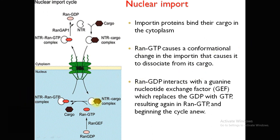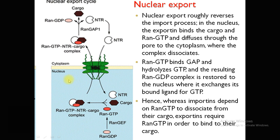Inside the nucleus, RanGTP causes a conformational change and the importin dissociates from the cargo protein. After this dissociation, RanGTP moves out from nucleus to cytoplasm, where it interacts with Guanine Nucleotide Exchange Factor or GEF, which replaces GDP with GTP, regenerating RanGTP and beginning the cycle again. This completes the nuclear import cycle.